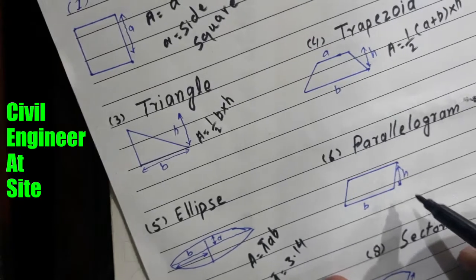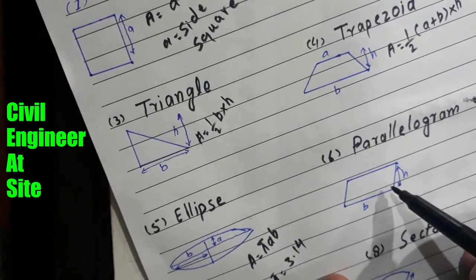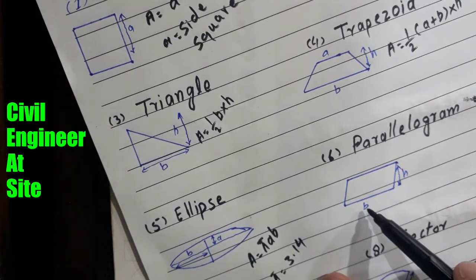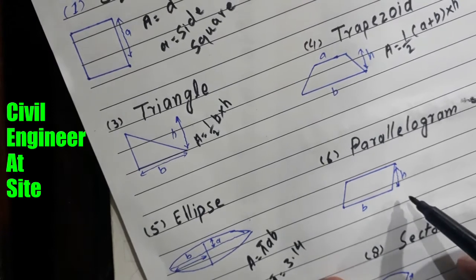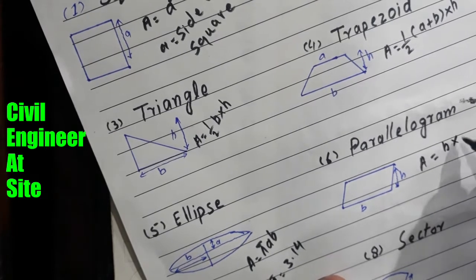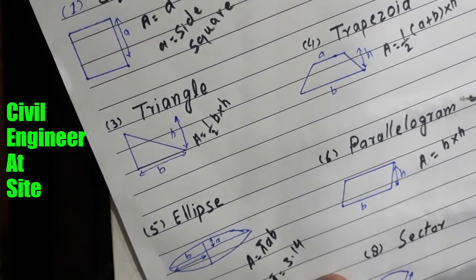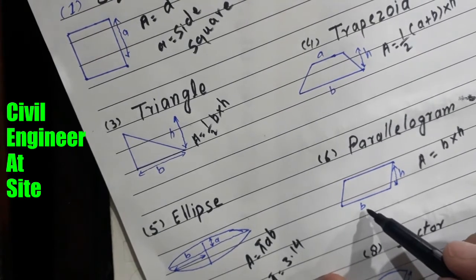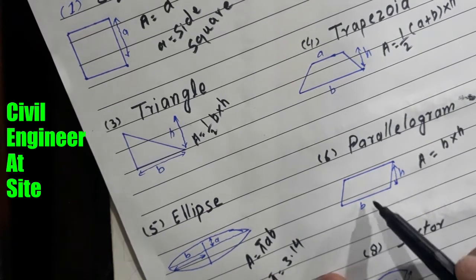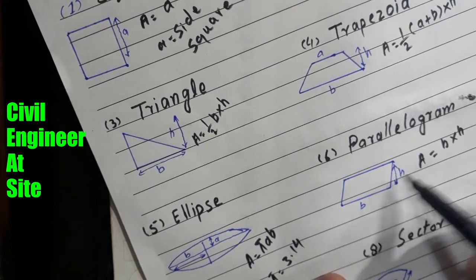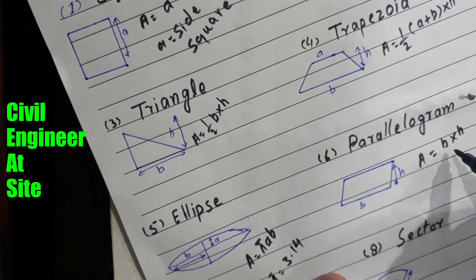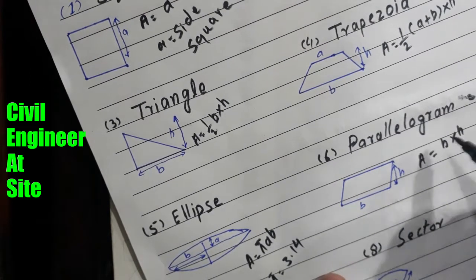The sixth shape is the parallelogram. In this shape all sides are parallel to each other. We denote the base as b and the height as h. The area of a parallelogram is simply A = b × h. These two sides are the same and parallel, and the other two sides are also the same and parallel. We put the values of b and h to calculate the area of the parallelogram.